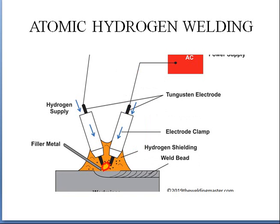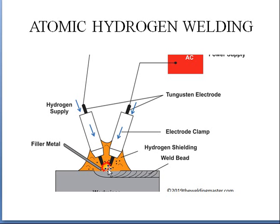Next one is atomic hydrogen welding. In atomic hydrogen welding we have two tungsten electrodes and we have a supply of hydrogen. Hydrogen will act as a shielding gas and this is the weld bed, which means where the welding is taking place. We have two tungsten electrodes, one connected to positive and another connected to negative. When these two electrodes are brought together, because of the ionization of gases present, an arc will be produced.